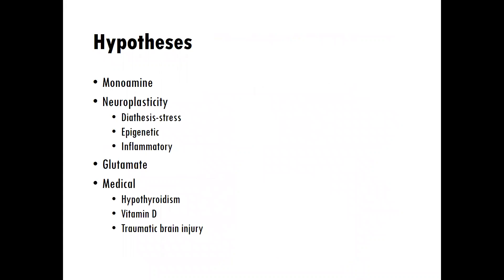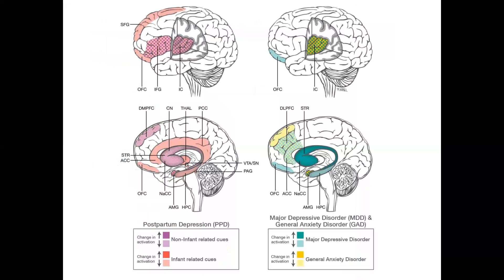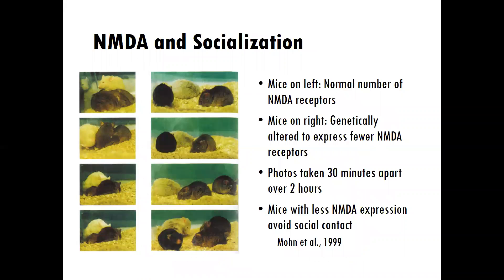We'll move into depression, covering the monoamine, neuroplasticity, glutamate, and medical hypotheses, all of which have a pretty important role in understanding depression because there are just different forms of depression, really. We'll also learn about postpartum depression and what happens in the brain during postpartum. And we'll look at the relevance of MDMA as a receptor in depression, and we'll learn about socialization behaviors relative to MDMA — for example, the functioning of mice who have impaired MDMA receptors genetically.